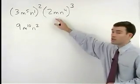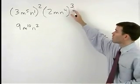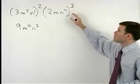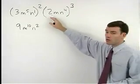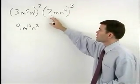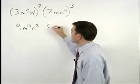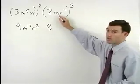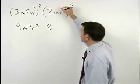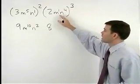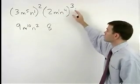To simplify 2mn to the fourth cubed, we would first cube our coefficient of 2 to get 2 times 2 times 2 or 8.